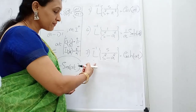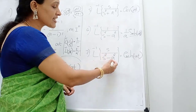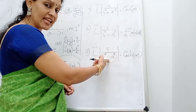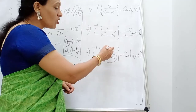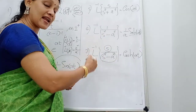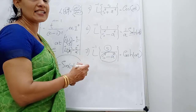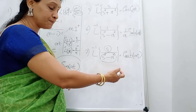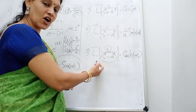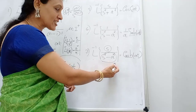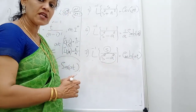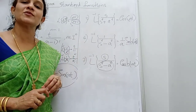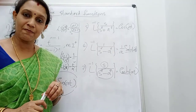The last result: L inverse of s/(s²-a²). Since it is minus, it is hyperbolic, and since s appears in the numerator, it is cosh(at). So L inverse of s/(s²-a²) equals cosh(at), the hyperbolic cosine. We need all these seven results to solve problems based on inverse Laplace transforms.